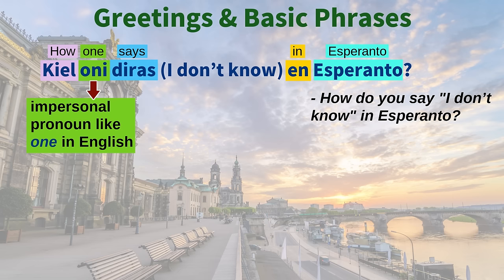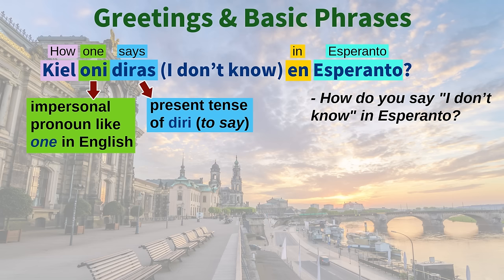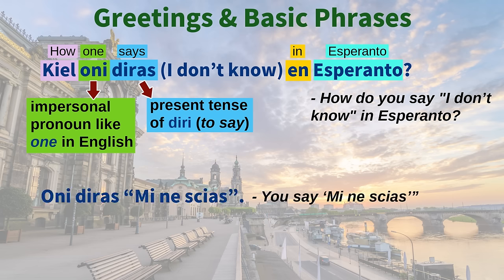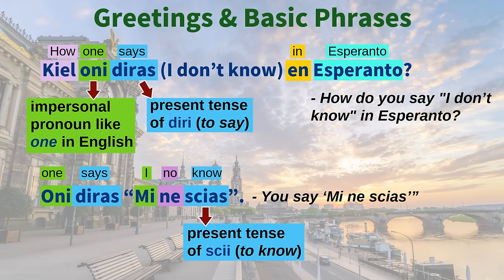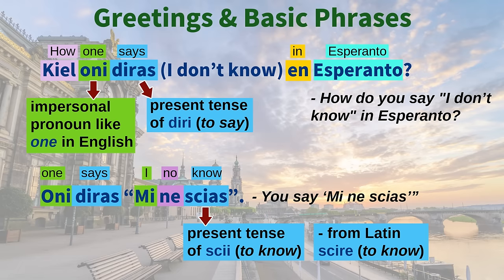"Mi sentas min feliĉa hodiaŭ" — I feel happy today, literally "I feel myself happy today." "Sentas" is the present tense of "senti" (to feel), resembling the verb in numerous Romance languages. "Feliĉa" (happy) also resembles the word in several Romance languages. "Oni" is an impersonal pronoun like "one" in English, referring to people in general. "Oni diras" means "you say" or "one says." "Scias" is the present tense of "sci" (to know), from Latin "scire" — the English word "science" also comes from a related Latin noun.